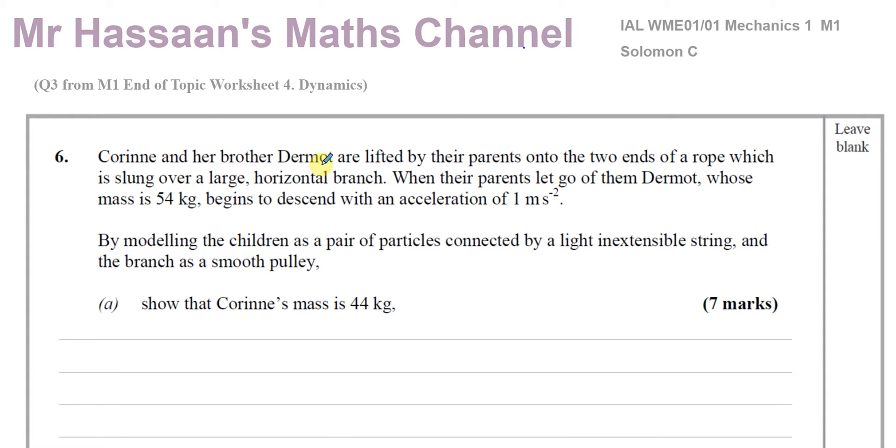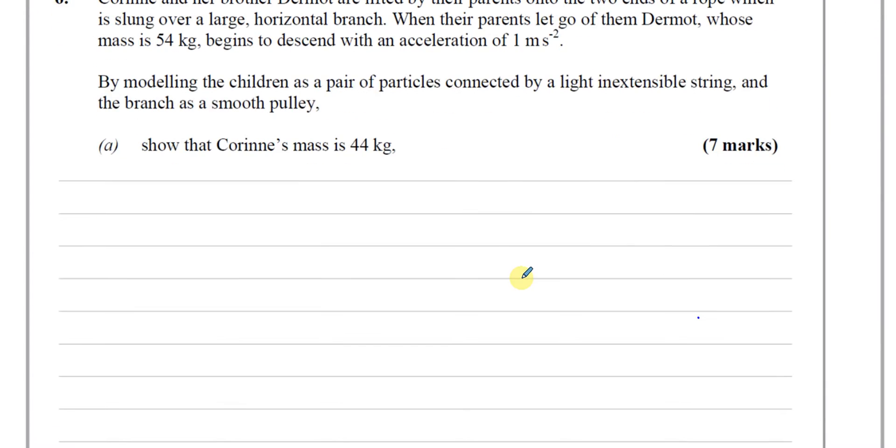It says Corinne and her brother Dermot are lifted by their parents onto two ends of a rope, which is slung over a large horizontal branch. When their parents let go of them, Dermot, whose mass is 54 kilograms, begins to descend with an acceleration of one meters per second squared. By modeling the children as a pair of particles connected by a light, inextensible string, and the branch as a smooth pulley, show that Corinne's mass is 44 kilograms.